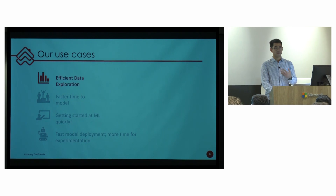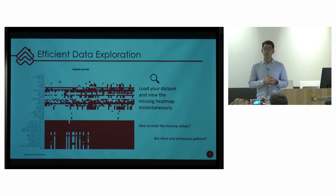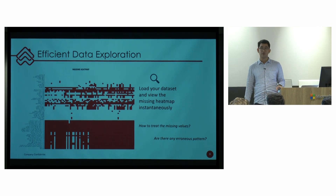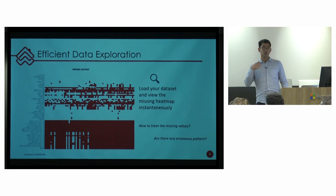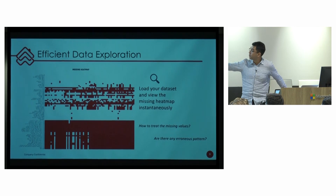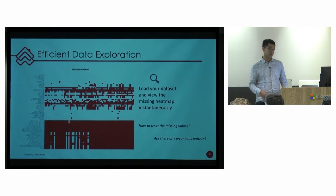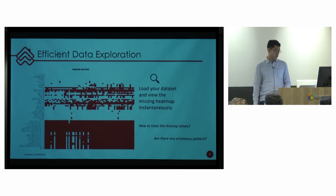It basically enables efficient data exploration. Joe showed some of the graphs that Autoviz does before, like the outlier and the correlation graph. The ones we found quite interesting were the missing heat map. Once you just load the data into Driverless AI, it's going to show you the pattern of missing values, because missing values tell you if there's any problem previously in the data pipeline and how you're gathering data. We found that quite useful.